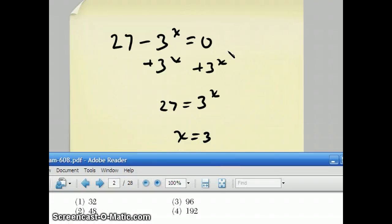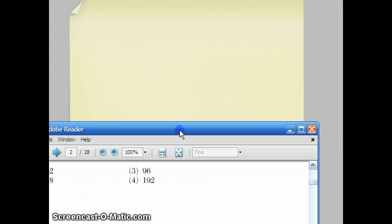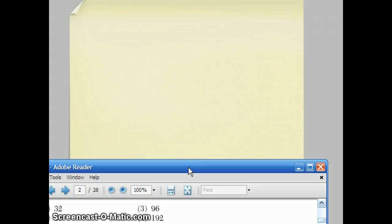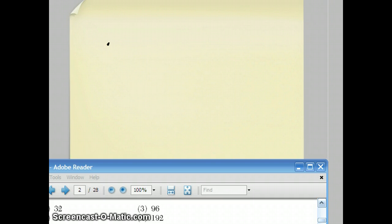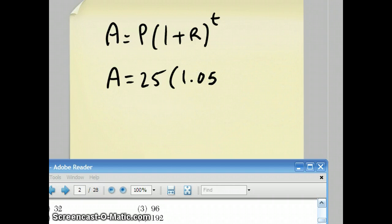Well, they give you the formula, so all you have to do is plug the numbers into the formula. The formula was A = P(1 + R)^T. They're asking how much will you have if you put $25, that's P. The interest rate is 5%, so that's 1 + .05, which is 1.05. And then we put the money in for 15 years, so that's the T value.